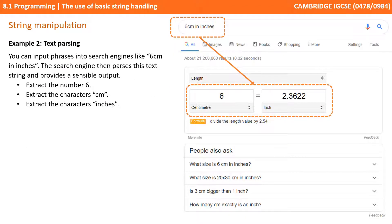This second example is using text parsing. You can input phrases into many search engines like six centimeters and inches. The search engine then parses this text string and provides a sensible output. In this case, it would need to extract the number six, the characters cm, and the characters inches.